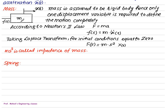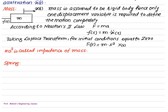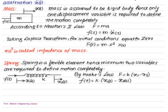So in the case of mass, you have to remember ms² as the impedance. For the spring, which is a flexible element, two displacements are required. F(t) is the force applied, x1 is the displacement at the force end, and x2(t) is the displacement at the other end. According to Hooke's law, force is proportional to k times displacement.